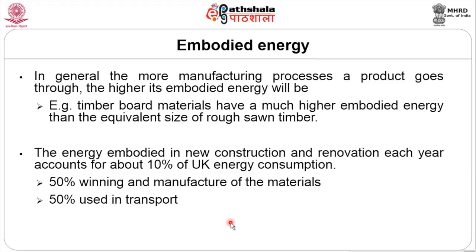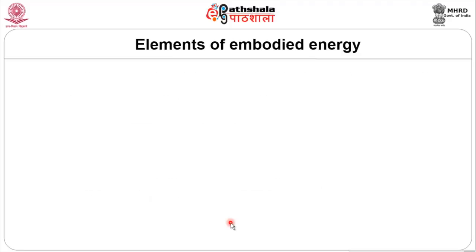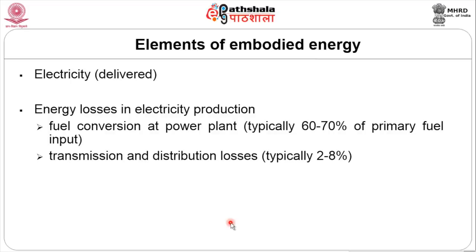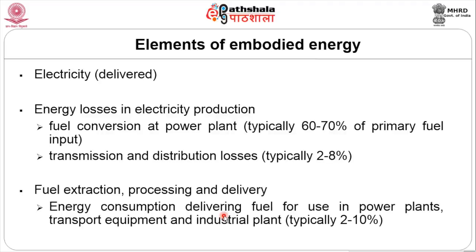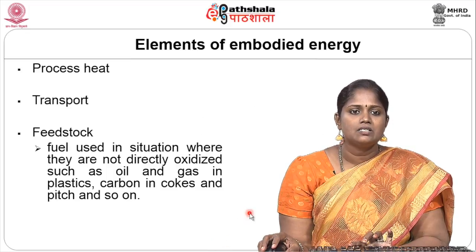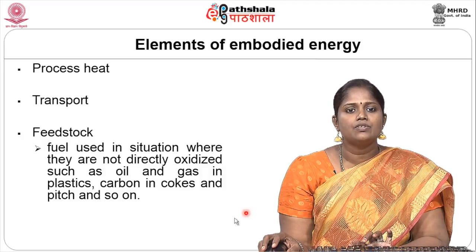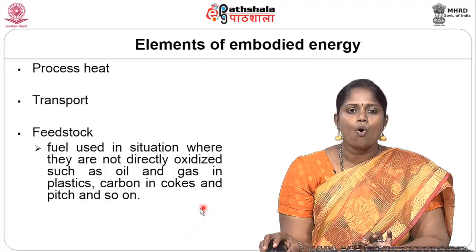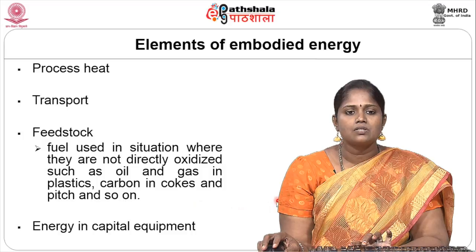More or less 50 percent of energy goes into the production of the material and 50 percent goes into transportation. The various elements involved include electricity delivered to the site and energy losses in production — converting materials in terms of fuel, nearly 60 to 70 percent consumed, with the other percentage going into wastage. The various elements of embodied energy include processing, heat, transport, and feedstock. Feedstock is the fuel used where it is not directly oxidized, such as oil and gases in plastics, and carbon in coke and so on.